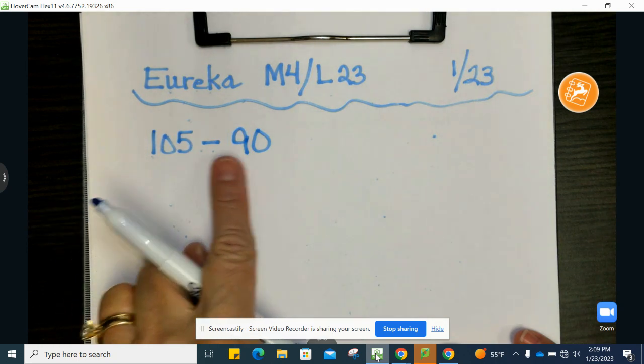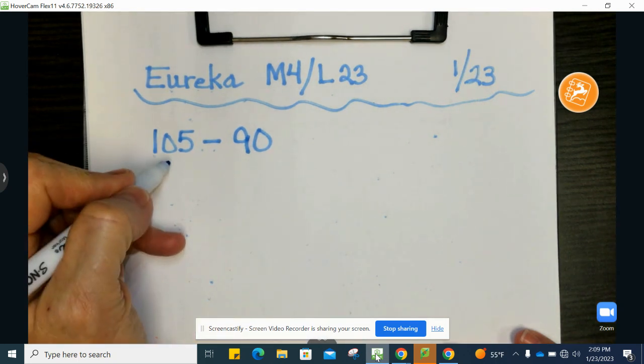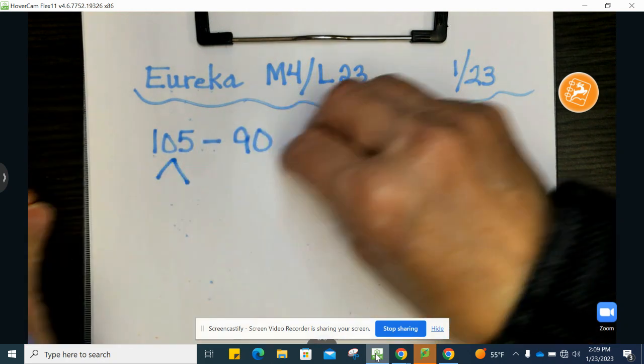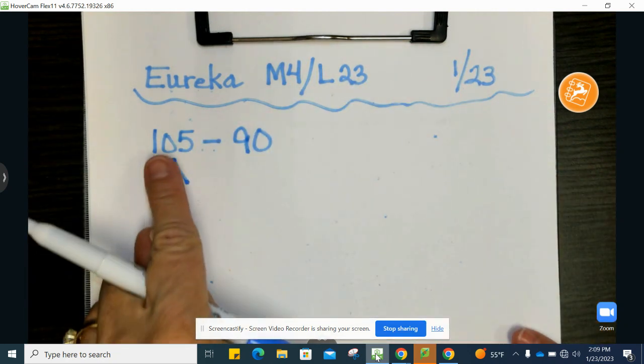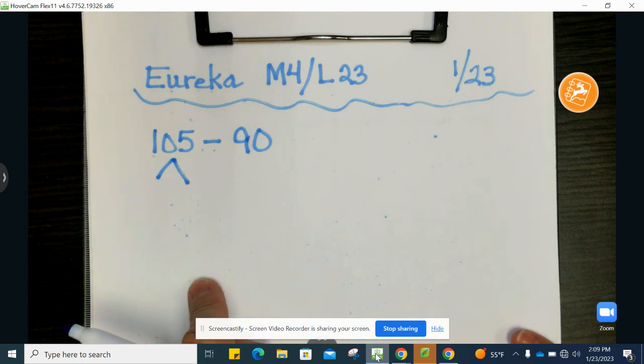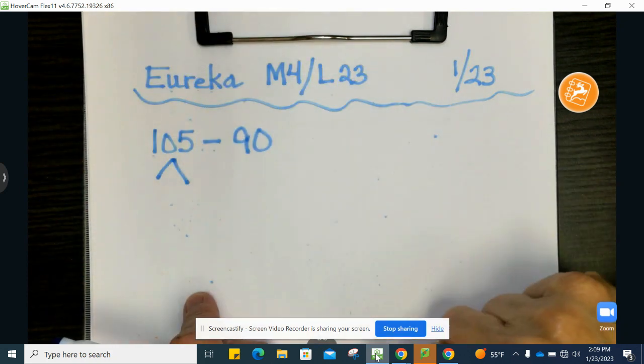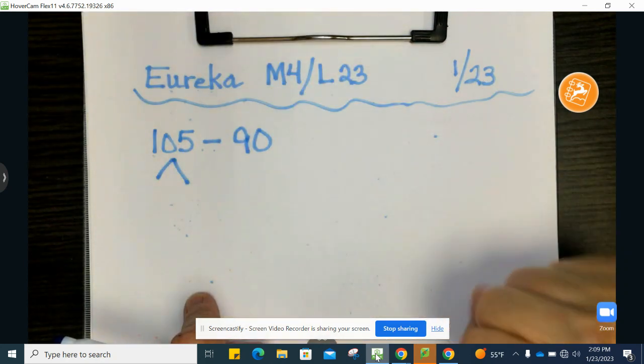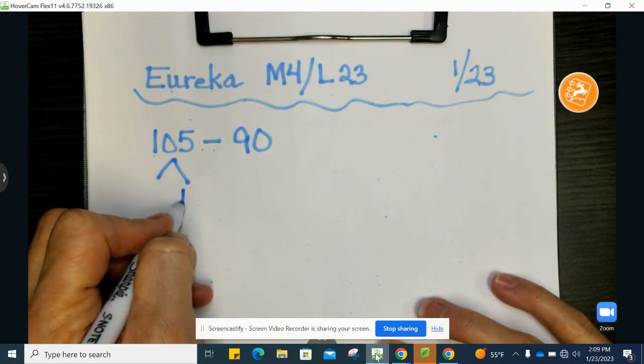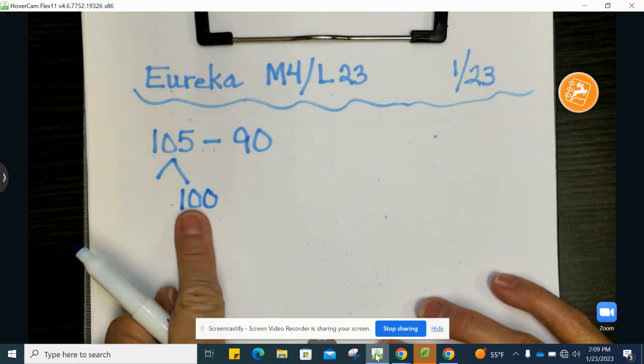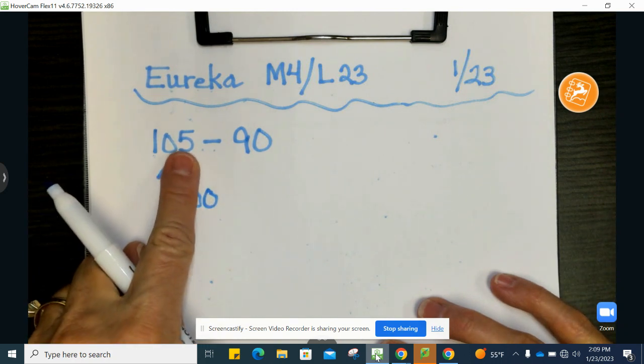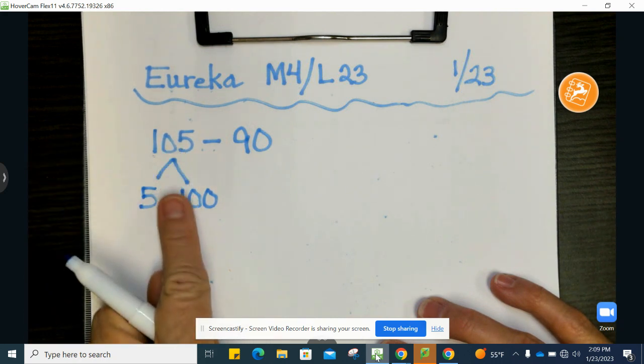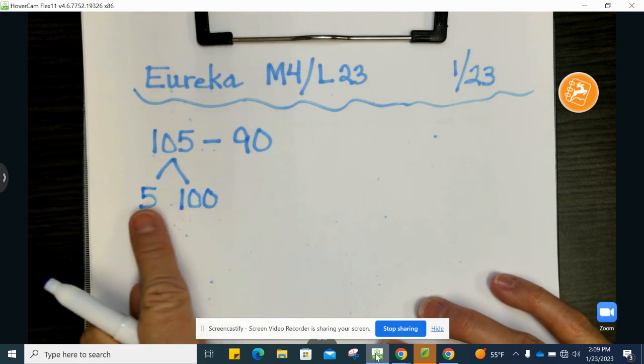So I have 105 minus 90. What I want to do is decompose, that means to take it apart, and I want to decompose 100 out of 105. Remember how we used to pull out a 10? Well, this time we're pulling out a 100. So I want to pull out a 100, and then I look at what's left behind, and a 5 is all that's left.